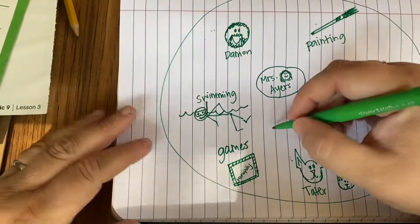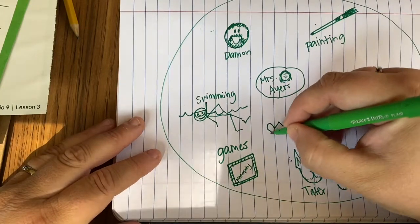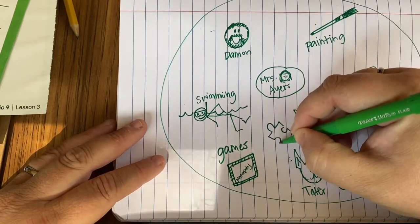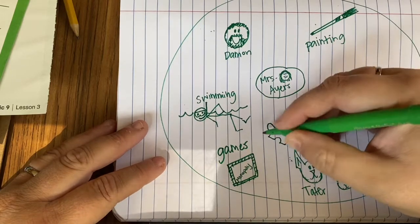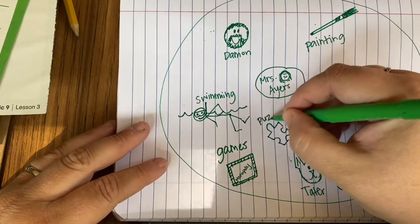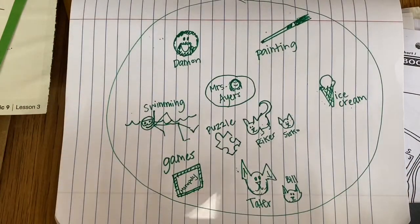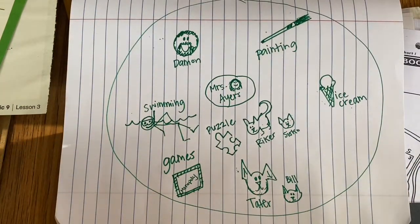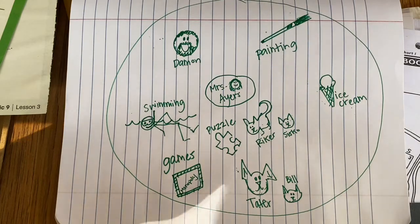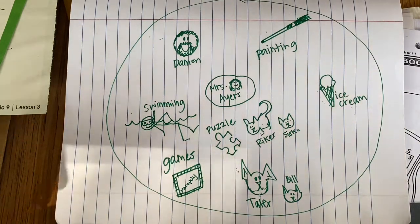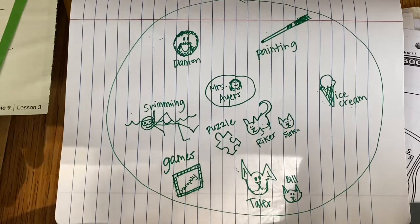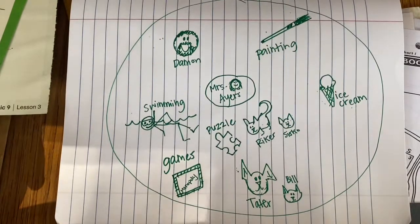I also like to do puzzles. I'm going to draw a little puzzle piece here. You need to do at least five things. You can do more than five things, but you need to do at least five things. This needs to be done today because we're going to use it for our writing project starting on Thursday. So you need to finish it today so that you're ready for Thursday's writing.